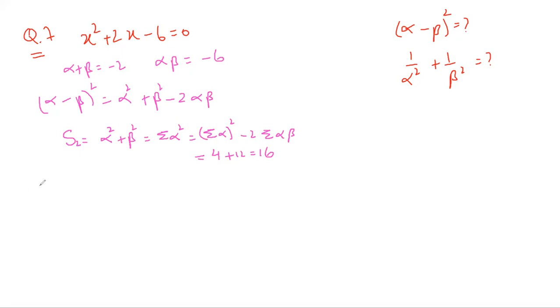So let's use that to determine this alpha minus beta whole squared. So this is sixteen instead of a squared plus b squared, I'm writing sixteen, and then I have plus twelve. Yes, so this is going to be twenty-eight. That is our alpha minus beta whole squared.